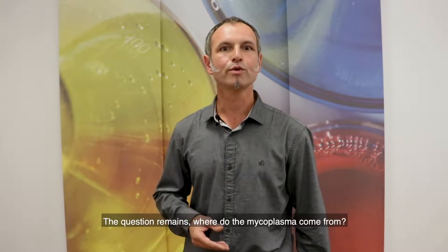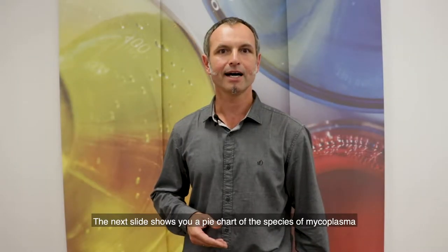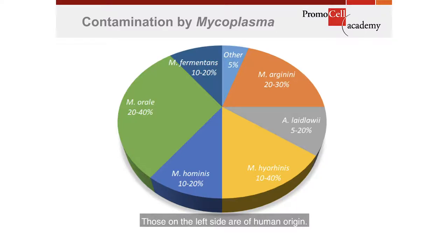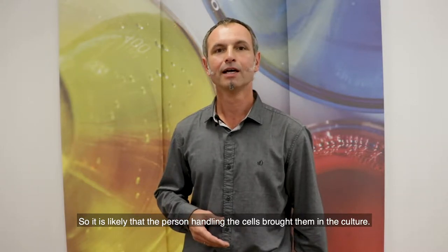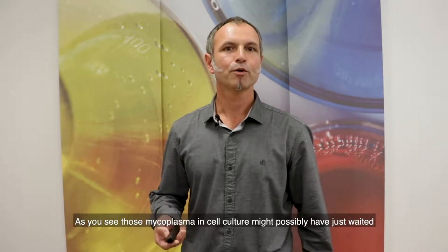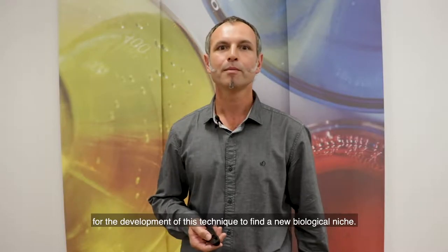The question remains: where do the mycoplasma come from? The next slide shows you a pie chart of the species of mycoplasma most frequently found in cell culture. Those on the left side are of human origin, so they live on human epithelia, meaning it's likely that the person handling the cells brought them into the culture. The other species found in cell culture are of animal origin and may have come from animal-derived supplements.